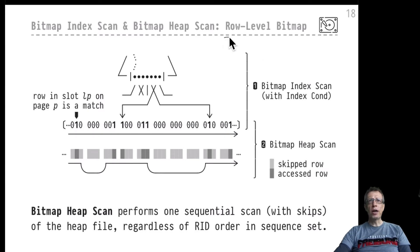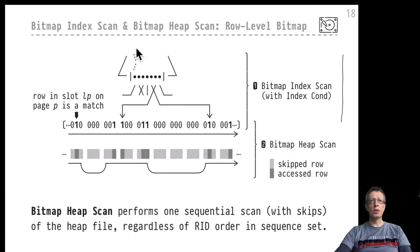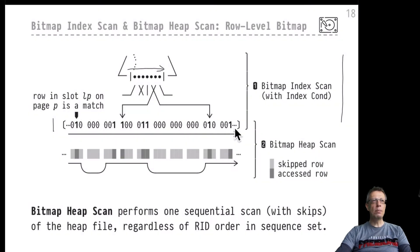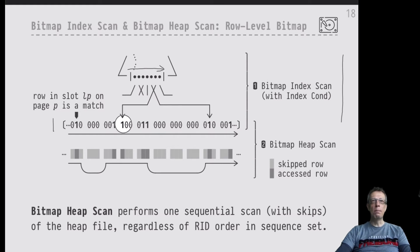Let's talk about the fine granular version first, where the bitmap indicates the exact rows that match the index condition. This is the first phase. The bitmap index scan performs a normal descent into the B+ tree, leading to the leaf level and the beginning of the sequence set to scan from left to right. When we find an index entry, we use its RID to set a bit in the bitmap data structure — each set bit represents a single row matching the index condition.